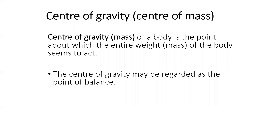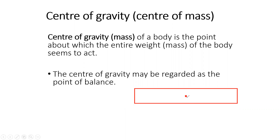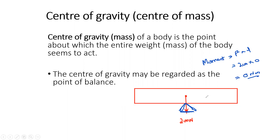If we pivot an object from its center of mass or center of gravity, the object will be in equilibrium — it will be balanced. This object is experiencing a force of 200 Newtons from the Earth. If we pivot it from its center of gravity, it won't have a turning effect because the force is acting on the pivot. So the moment or turning effect is zero, since moment is the product of force and distance — there is a force of 200 N but no perpendicular distance, giving zero Newton meters. The object will be balanced, so the center of gravity may be regarded as a point of balance.